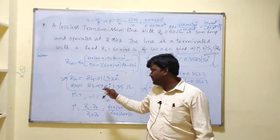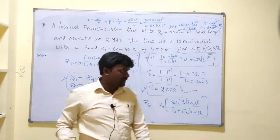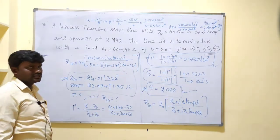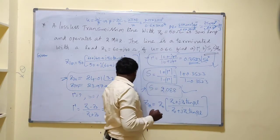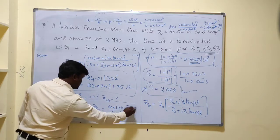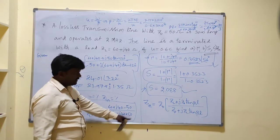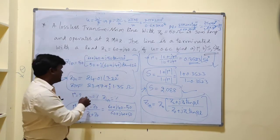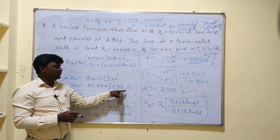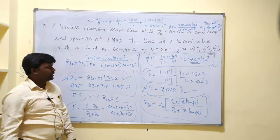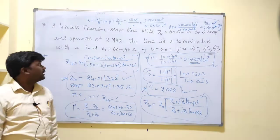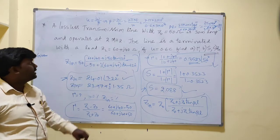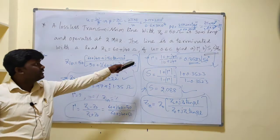The calculations of gamma, S, and Zin are complete for the given data. Remember the formula S equals (1 + |gamma|) / (1 − |gamma|), gamma equals (ZL − Z0) / (ZL + Z0), and the Zin formula for a lossless line. Final answers: Zin equals 23.97 + j1.35 ohms or 24.01∠3.22°. This covers the calculation of gamma, S, and Zin from Z0, ZL, and phase velocity.